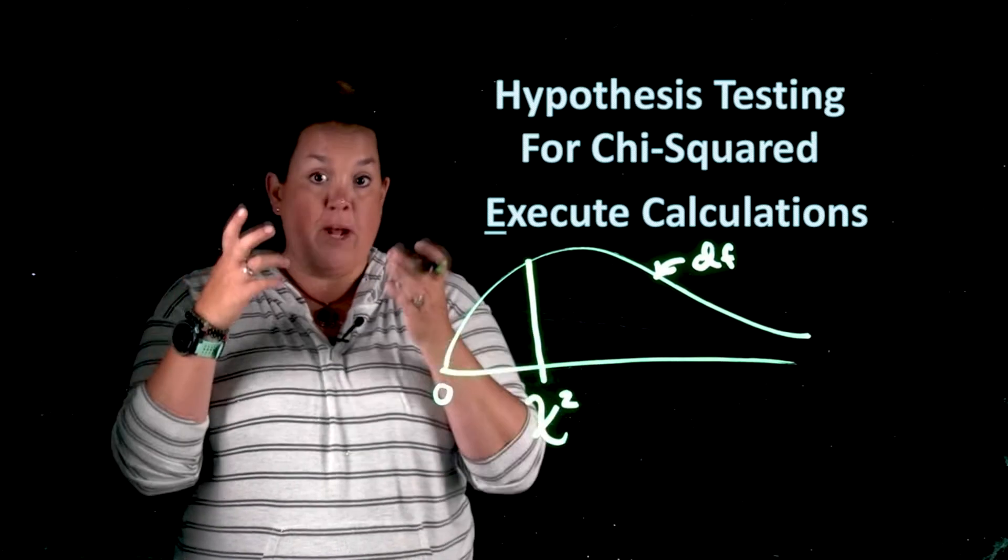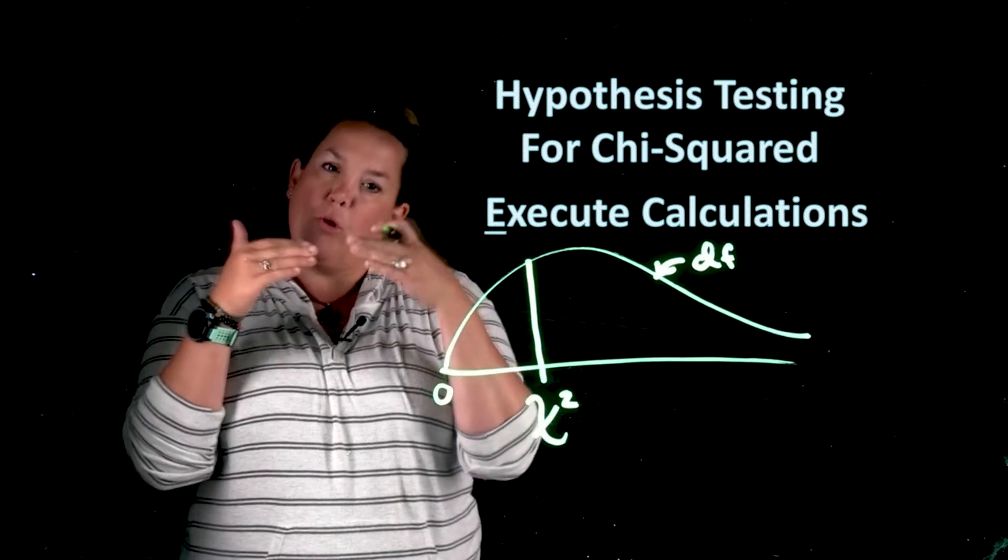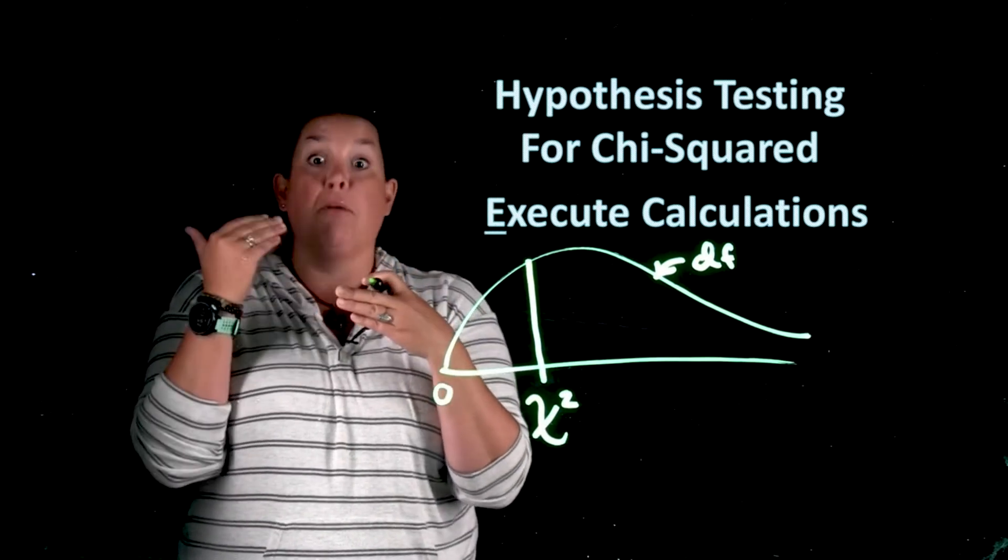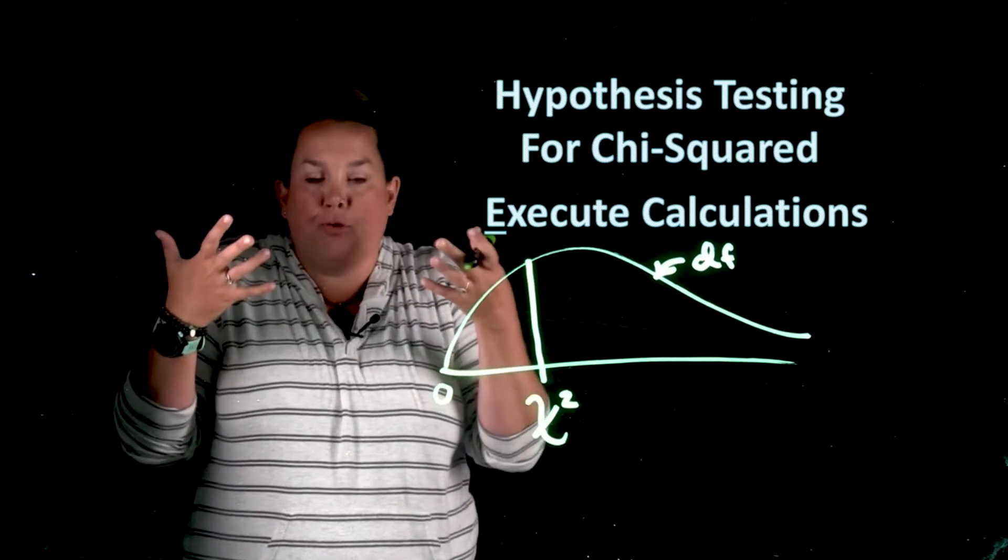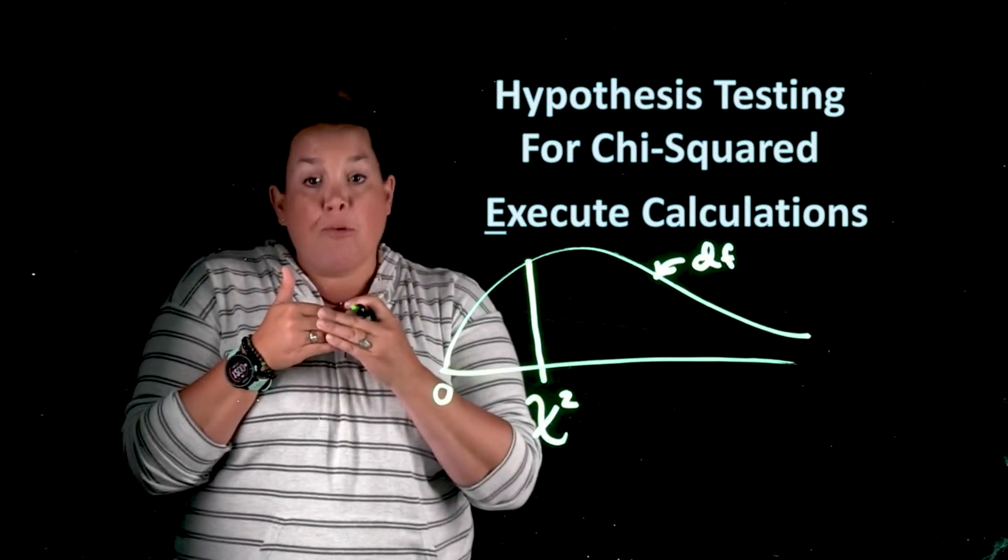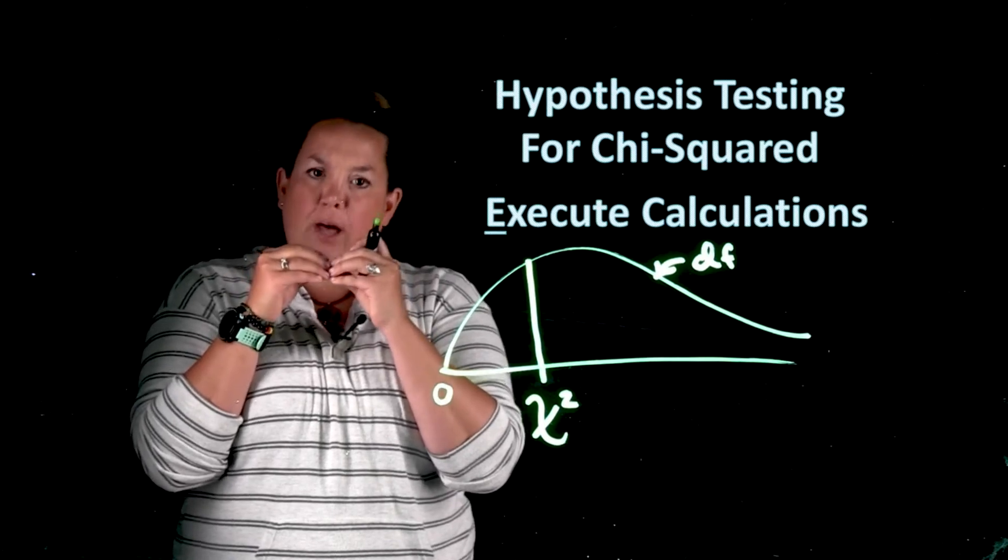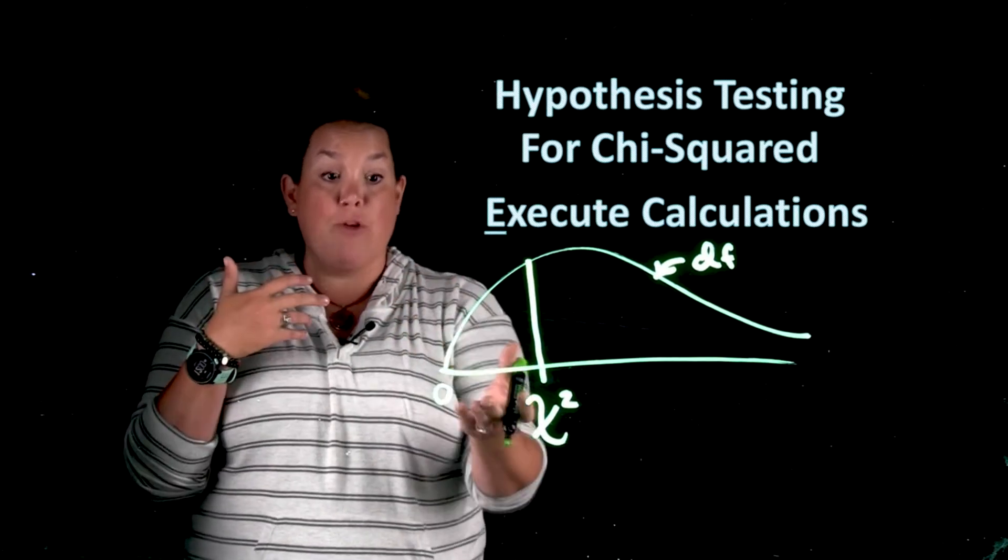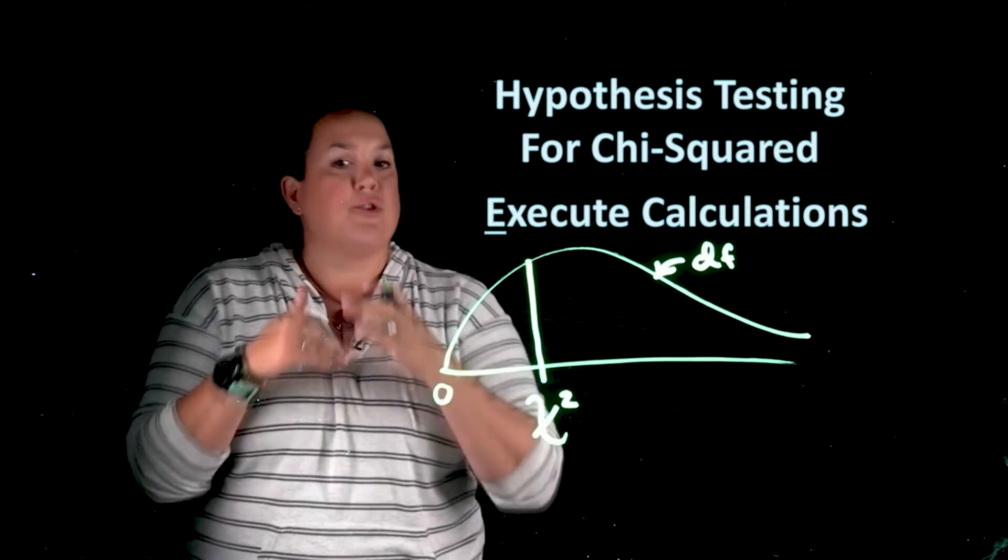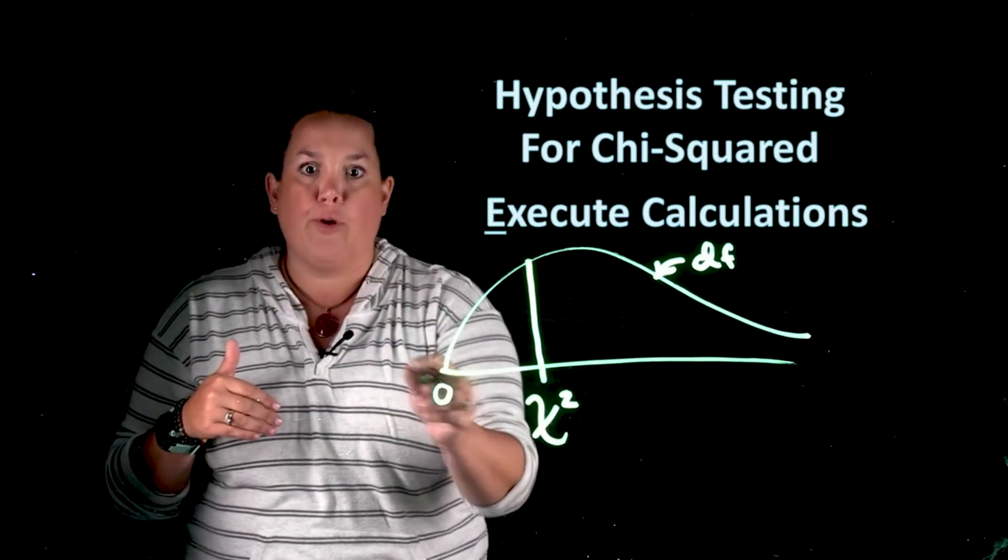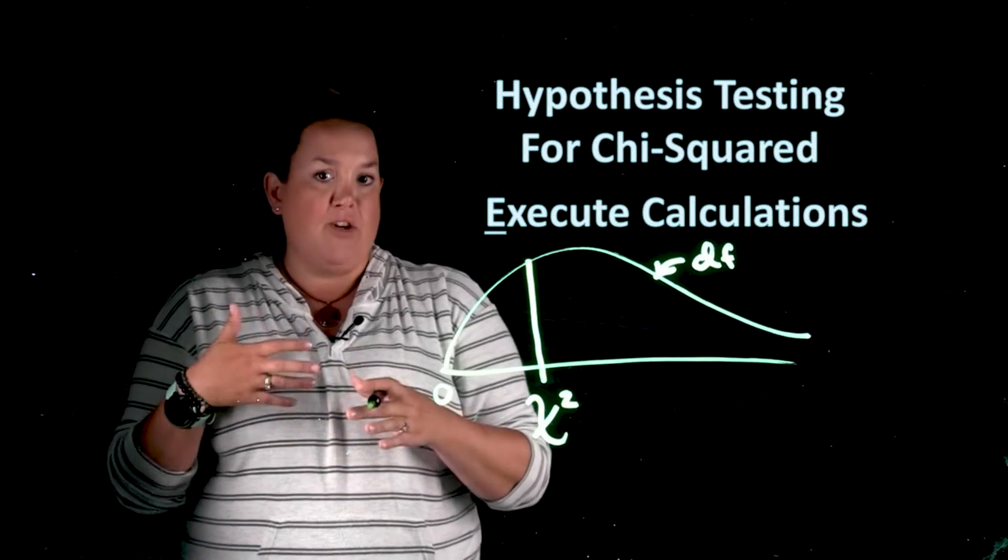So that means observed minus expected, if those numbers are really close together, that means that we're not seeing an actual relationship in the observed values or in the actual data. So that also means that if those differences are really small and they're really close together, we're going to end up seeing a chi-squared that's close to zero. So no association or no relationship, we're going to expect to see a chi-squared close to zero. Alright, that's the first part.